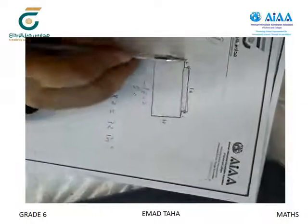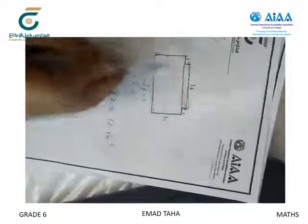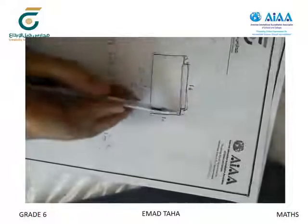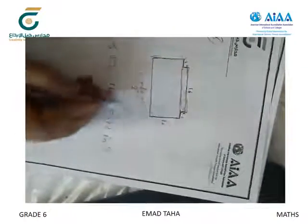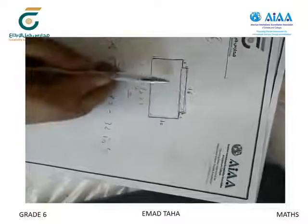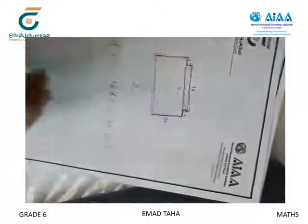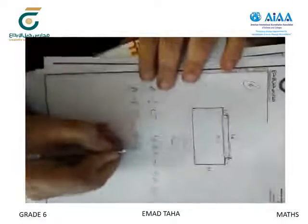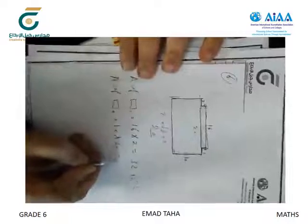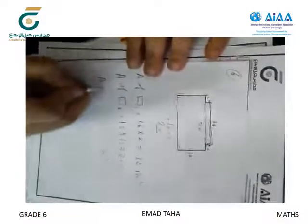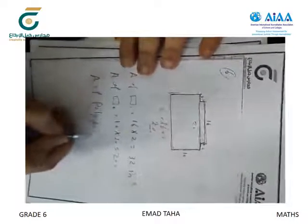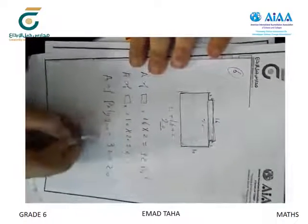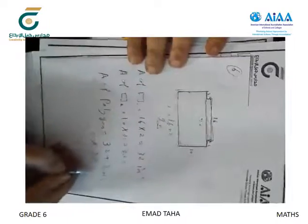Now the other rectangle. The length of the total base: 16 plus 2 plus 2 equals 20, and the width equals 10. Area of the second rectangle equals 10 times 20 equals 200. So the area of the polygon equals 32 plus 200 equals 232 square inches.